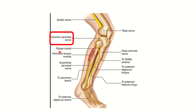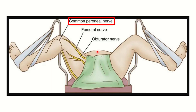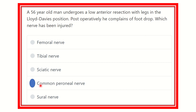It is now clear that the common peroneal nerve, as it bends around the neck of the fibula, may be damaged or injured in the Lloyd Davis position during flexion or semi-flexion of the knee joint. The pathway of the common peroneal nerve is somewhat bent, so it may get friction with the bone and may be damaged. Therefore, our final answer is the common peroneal nerve.